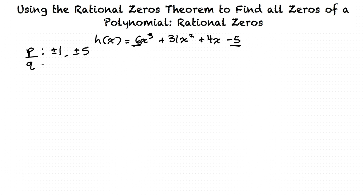The factors of q, which is 6, are plus or minus 1, plus or minus 2, plus or minus 3, and plus or minus 6. Now we will list all the possible rational zeros of the polynomial 6x cubed plus 31x squared plus 4x minus 5 by writing all the combinations of p over q.